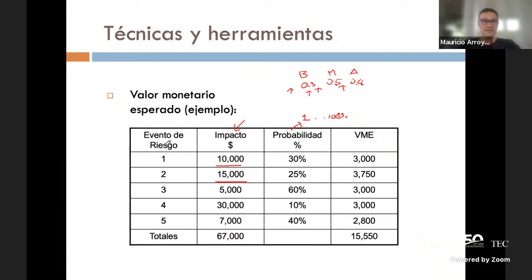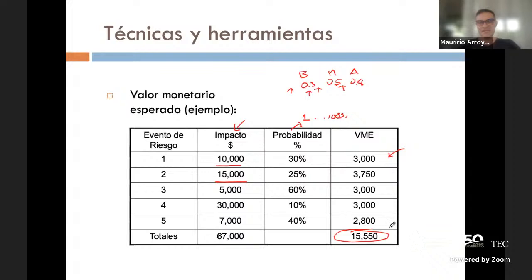Al final tomo el valor del impacto y lo multiplico por la probabilidad, lo cual me da un valor monetario esperado. De estos 5 riesgos prioritarios, el valor monetario esperado del riesgo 1 sería de 3.000 dólares; es decir, multipliqué la probabilidad de que se dé por el monto total del impacto. El otro por un 25% da 3.750. ¿Qué es lo que estamos haciendo al final? Calculando un valor de cuánto vale la incertidumbre.